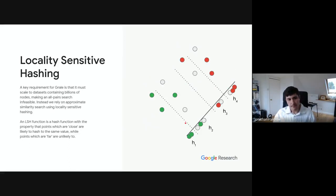So locality-sensitive hashing. A key requirement for GRAIL is that we have to scale to datasets containing billions of nodes. So you can imagine a dataset with billions of nodes doing an all-pair search is completely infeasible. Instead, what we do is we rely on an approximate similarity search using locality-sensitive hashing. So an LSH function is just a hash function but it has the property that points which are close to each other are likely to hash to the same value, while points which are far from each other in some sense are unlikely to share a hash value.